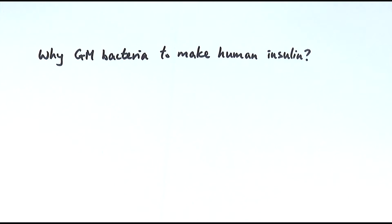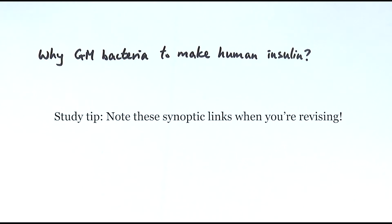In this video we'll be looking at two specific questions. First, why do we use genetically engineered bacteria to make human insulin for the treatment of diabetes? And another question will be about the use of stem cells in diabetes treatment. These are relatively common exam questions and sometimes people find them tricky because there are often links to other chapters, specifically chapters 21 and 22 about biotechnology and genetic manipulation techniques.